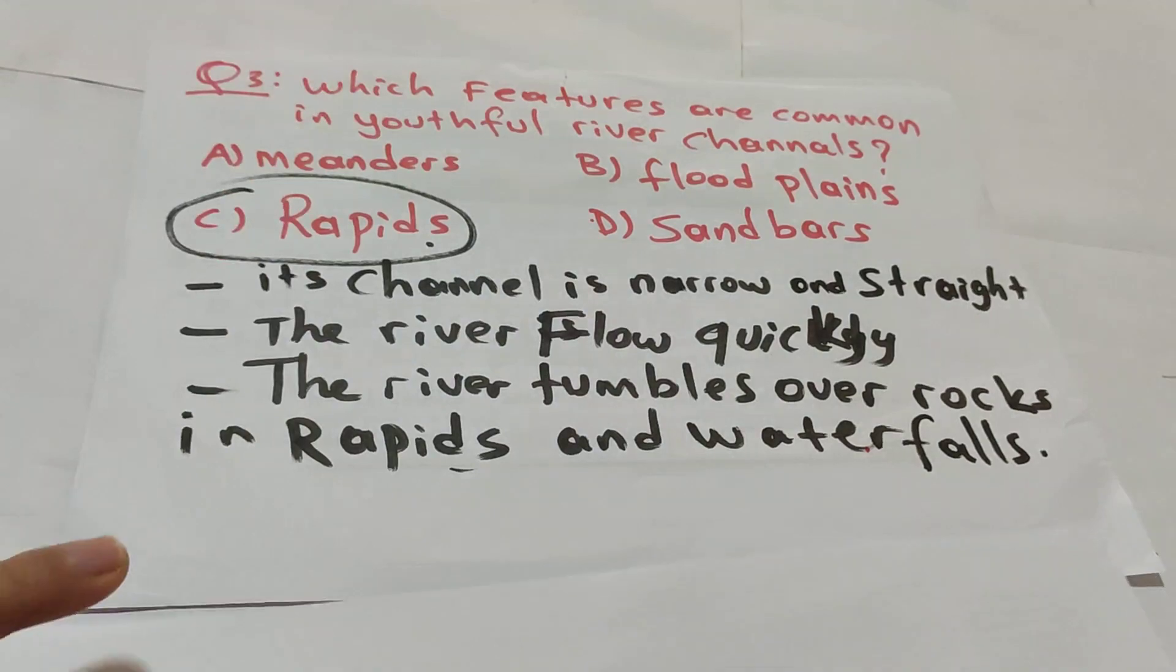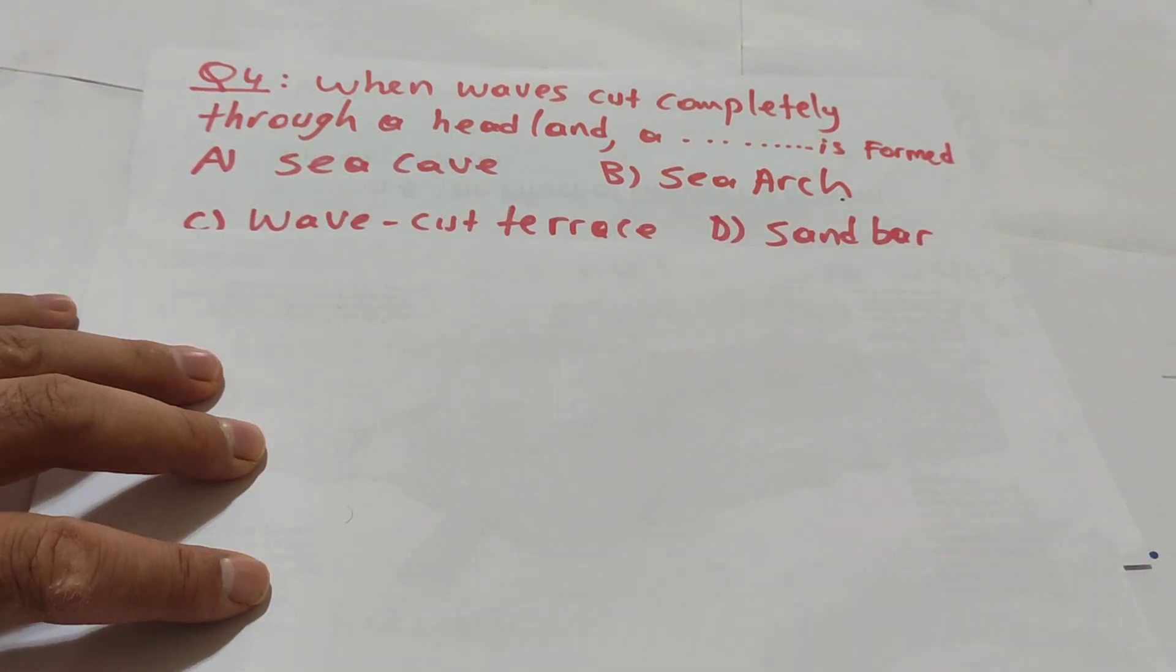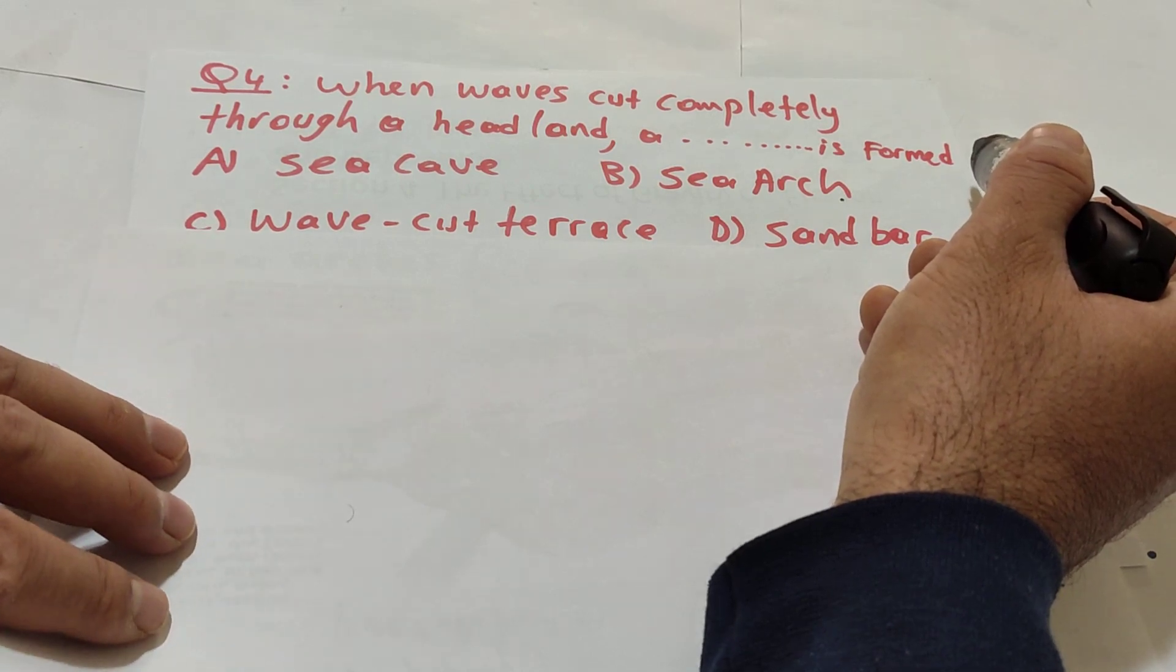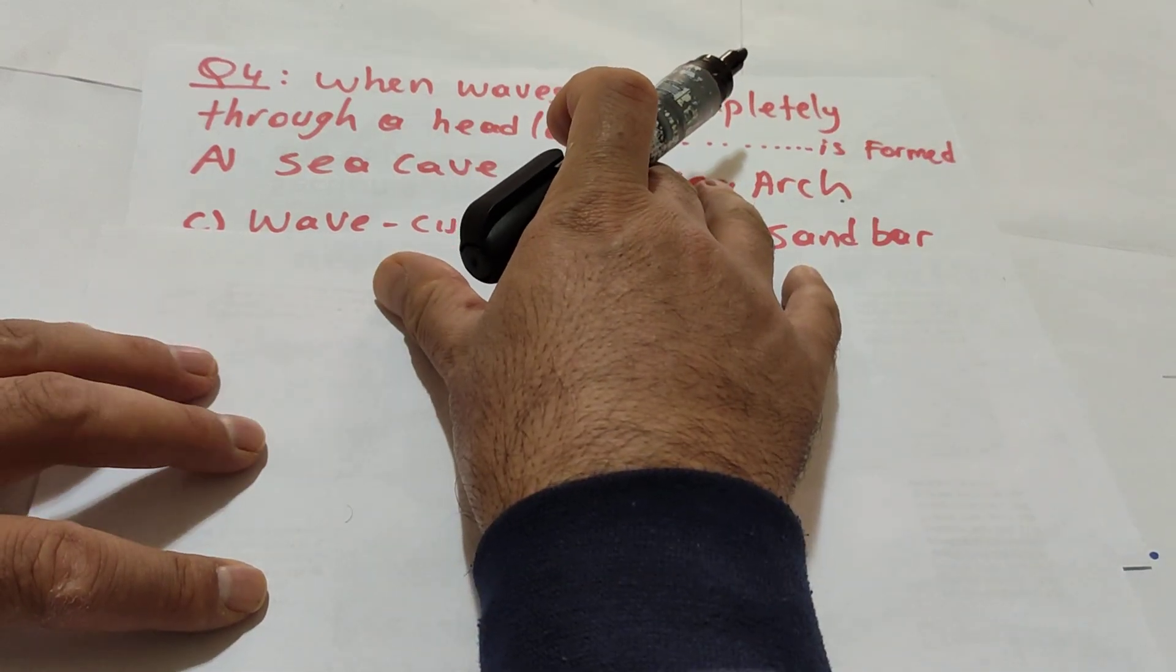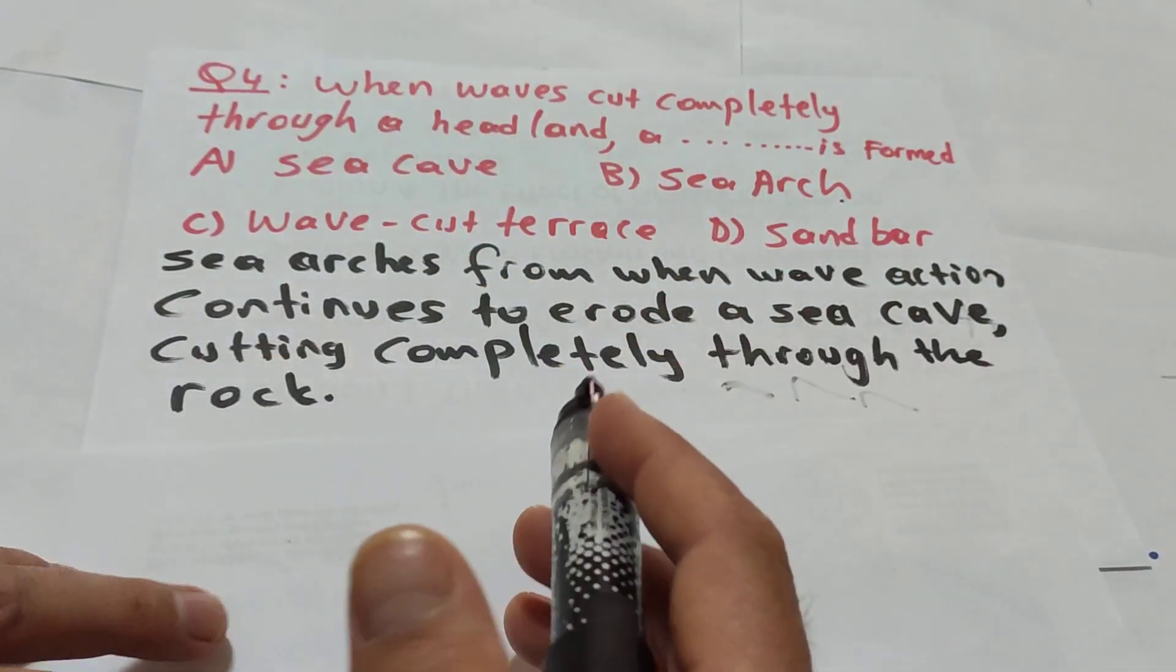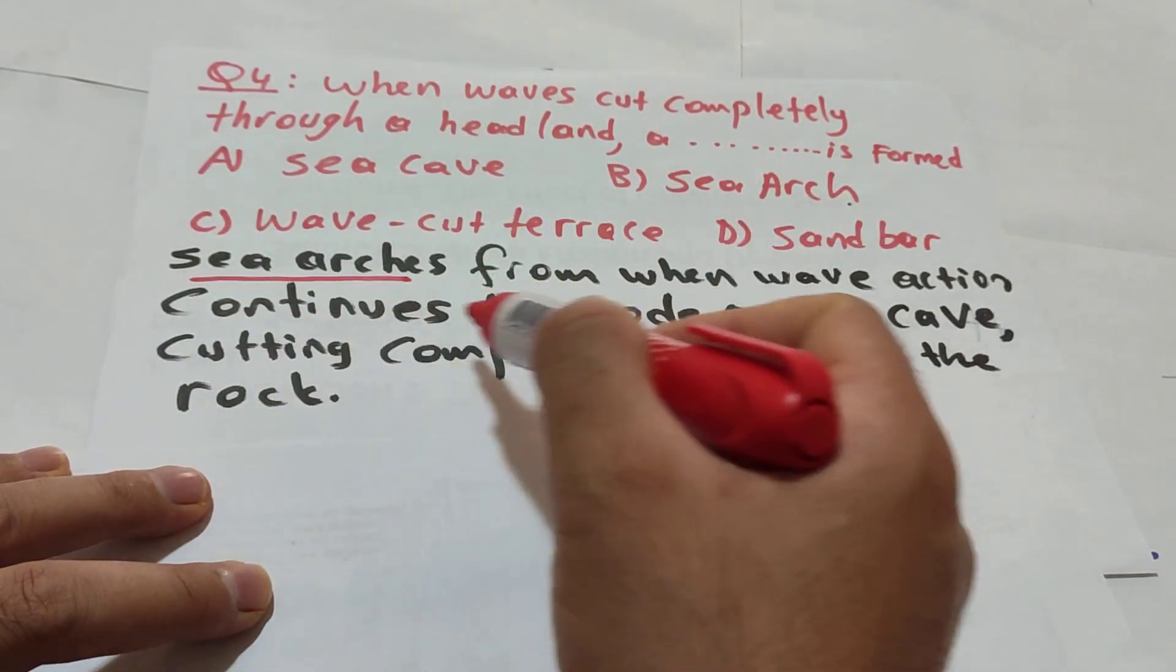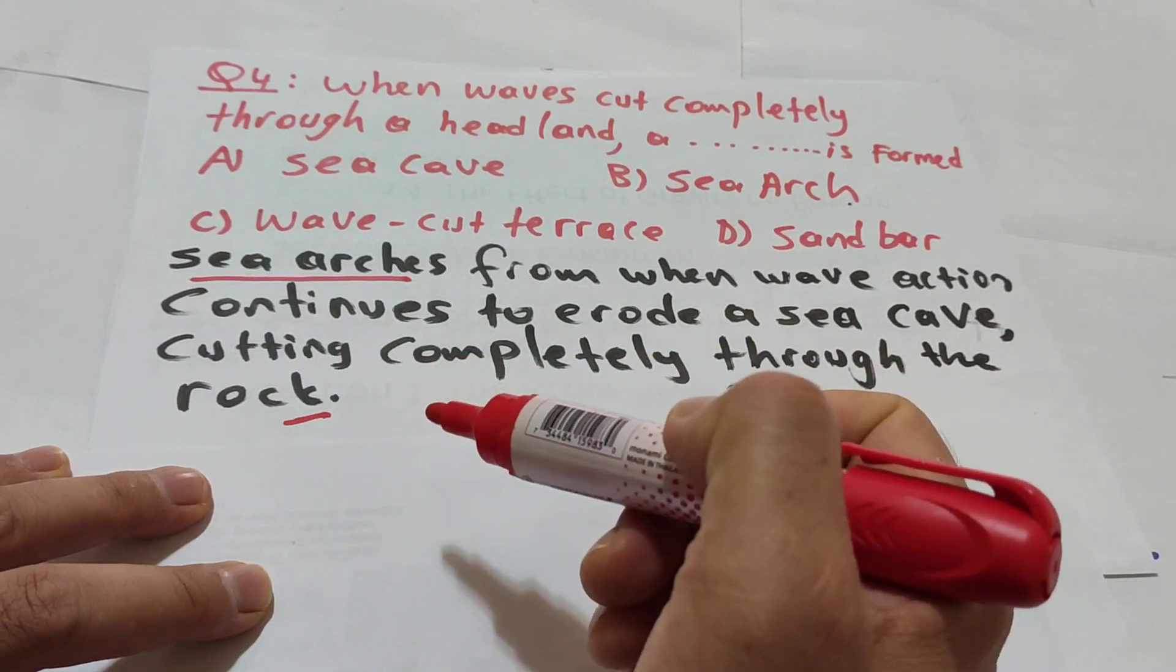Question 4: when a wave cuts completely through a headland, what is formed? Remember five kinds of sea cliffs. I told you, you have to memorize them because it is coming in each exam. The answer will be sea arc. The definition of sea arcs: when wave action continues to erode a sea cave cutting completely through the rock.